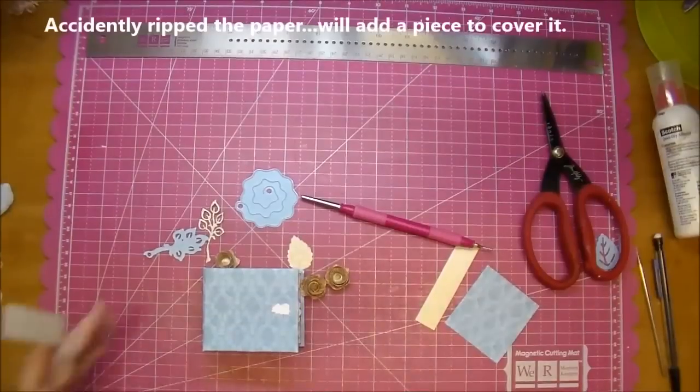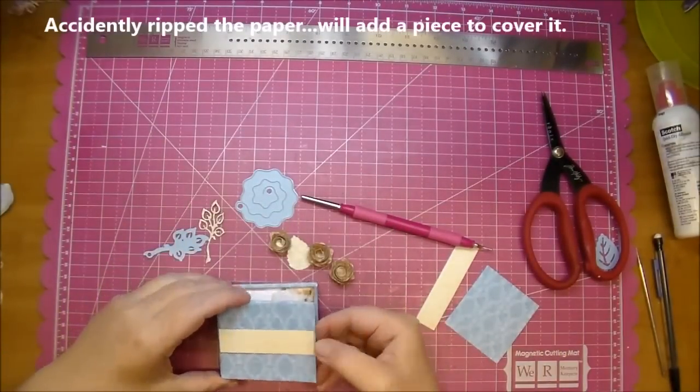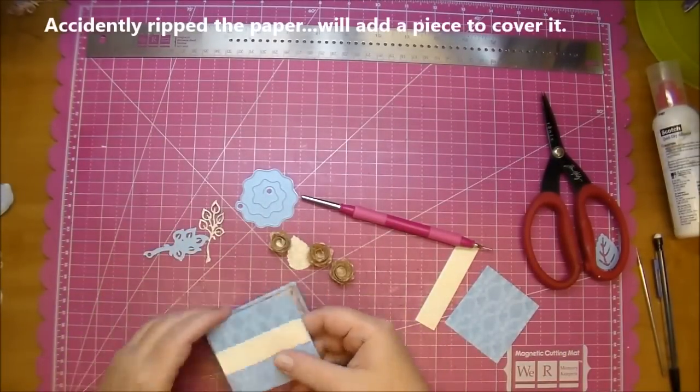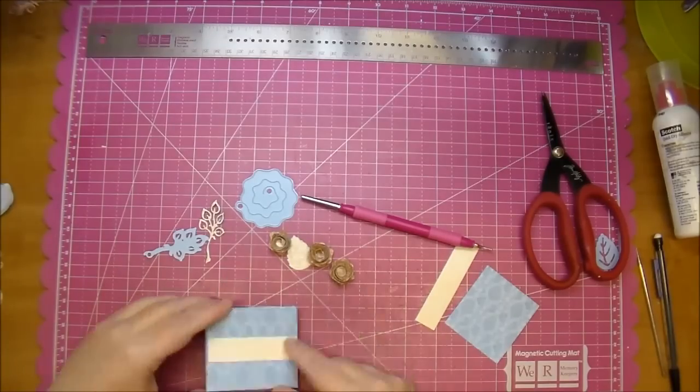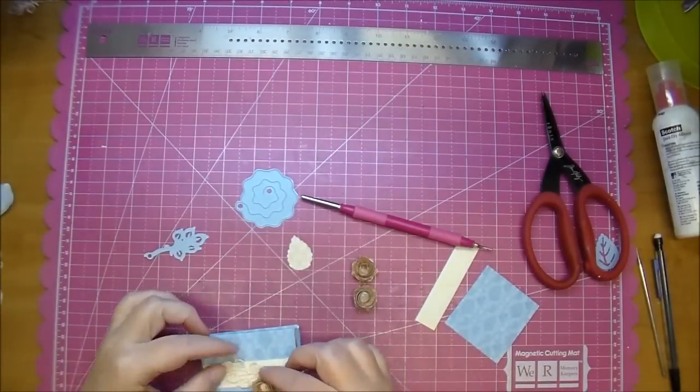Here I'm showing you I accidentally ripped the paper. I was working with glue and I had a piece of paper stick to it by accident. When I pulled it off it ripped the paper. So I'm just adding a little decorative piece from the same collection and now just going to decorate the front of my album.